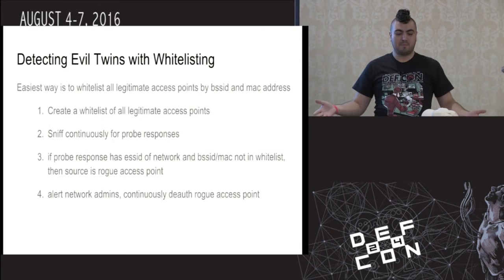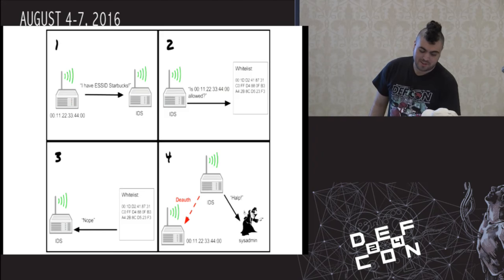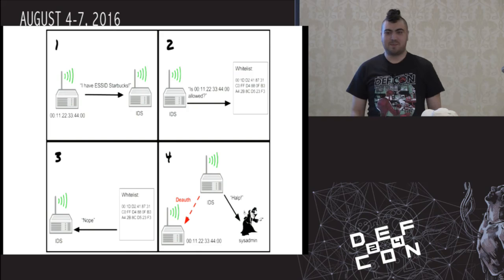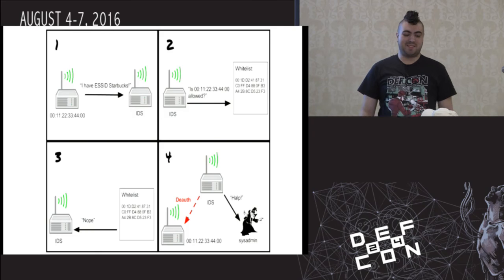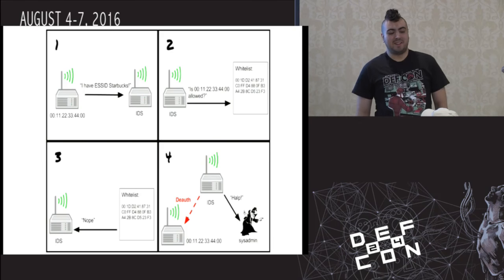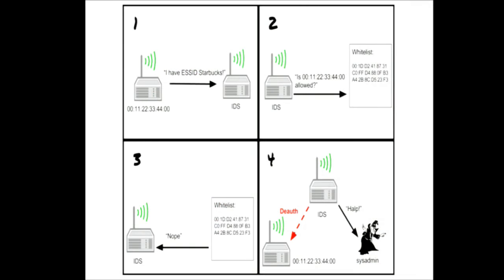If you have a BSSID that is not on your whitelist, then at that point you know something shady is going on. For example, if someone is broadcasting an ESSID called 'Starbucks' and your IDS system picks this up and checks the whitelist and the BSSID is not there, you just take action accordingly.